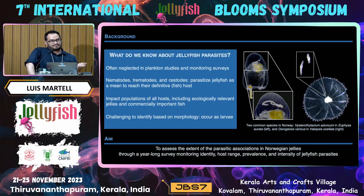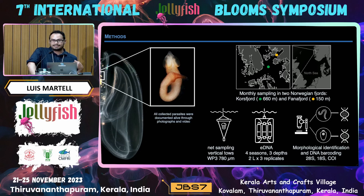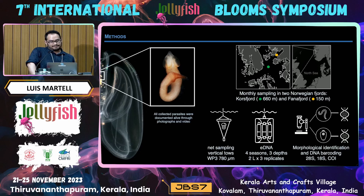We examined the composition of the parasite community, the host range, the prevalence, and the intensity during a year. We were sampling every month across two fjords in western Norway. Fanafjorden is a deeper fjord, like Trondheimsfjorden, at about 660 meters, while Fanafjord is more internal — it doesn't have open access to the ocean and is shallower at 150 meters.